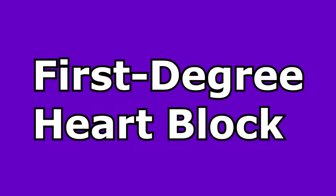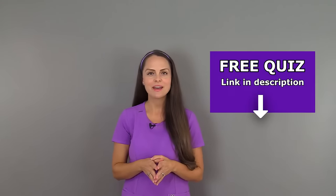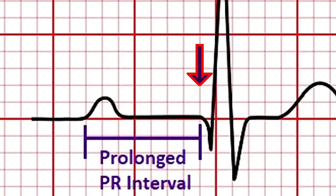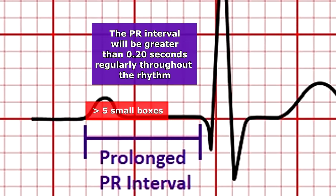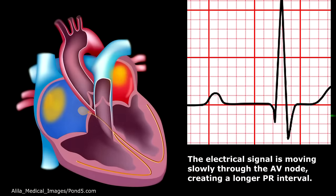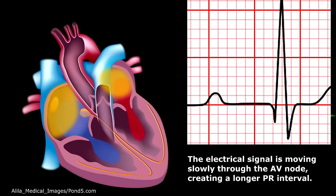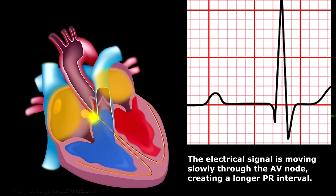First, let's look at first-degree heart blocks. When you analyze this rhythm you may think at first that you have some type of sinus rhythm, but when you take a closer peek you will see it has a subtle secret — something is up with its PR intervals. The PR intervals will be prolonged, greater than 0.20 seconds. This occurs because the electrical signal travels slowly through the AV node, creating that longer PR interval.